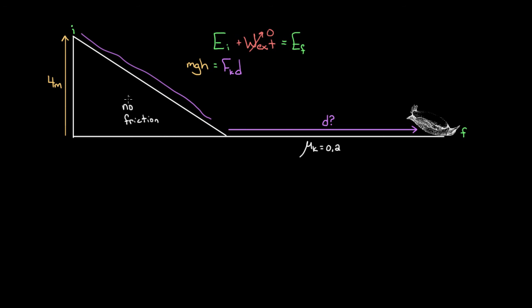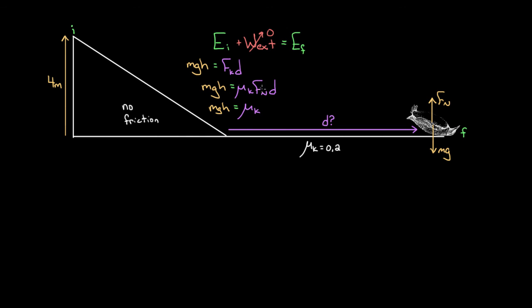There will be thermal energy generated, ending up in our system. The thermal energy generated is the force of friction times the distance Walter slid across the surface that had friction — only on the horizontal patch, not the frictionless ramp. The force of friction is the coefficient of friction times the normal force, times the distance D. Because Walter was sliding over a horizontal surface, the normal force equals the force of gravity, so we can say MGH equals mu_K times MG times D. Something miraculous happens: the M's cancel, and actually the G's cancel too. So D equals H divided by the coefficient of kinetic friction.